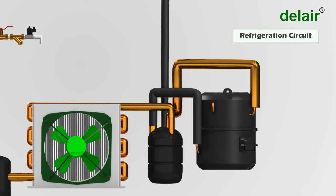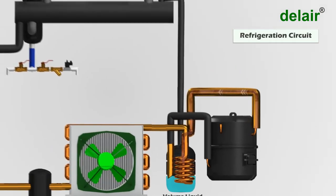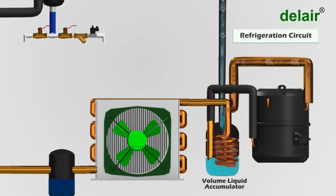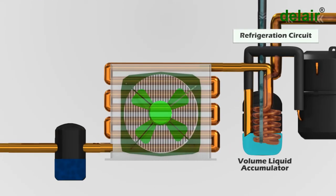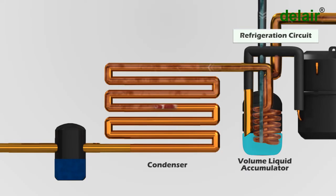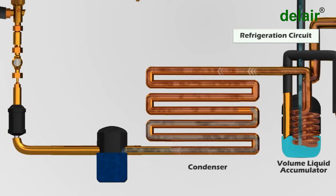In the refrigeration circuit, the compressor pumps refrigerant gas into the volume liquid accumulator where this hot refrigerant gas transfers its heat to cold refrigerant coming in liquid form from the air-to-refrigerant heat exchanger. This high pressure and high temperature refrigerant goes into a condenser, which can be either air cooled or water cooled. The condenser transfers the heat from the refrigerant gas to the ambient air or cooling water as the gas condenses into a liquid, which is collected into a liquid receiver.